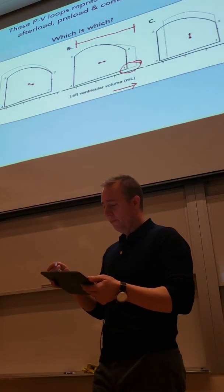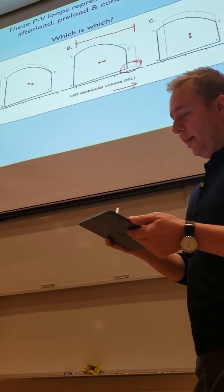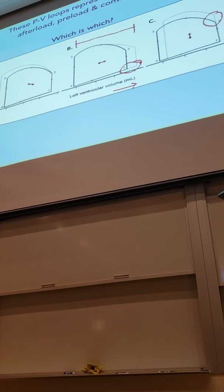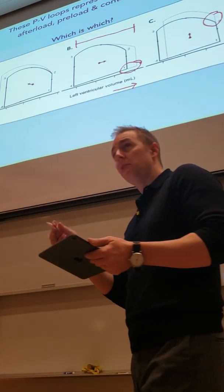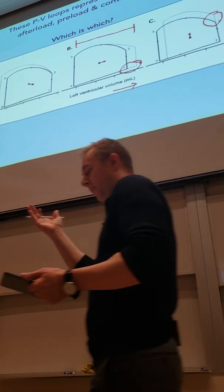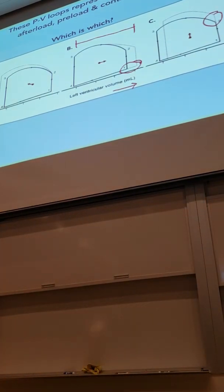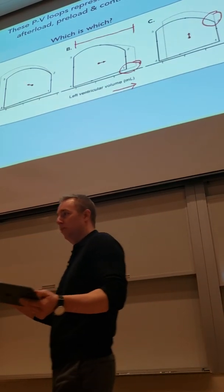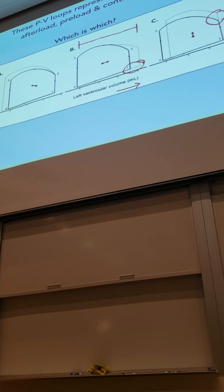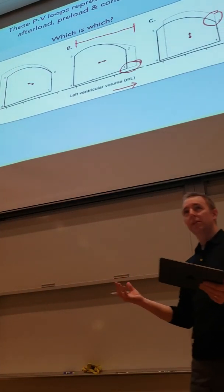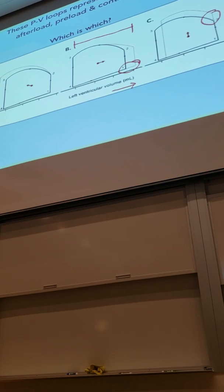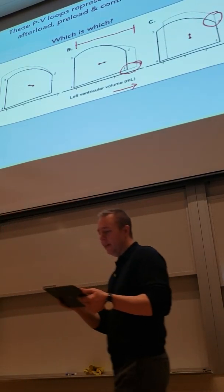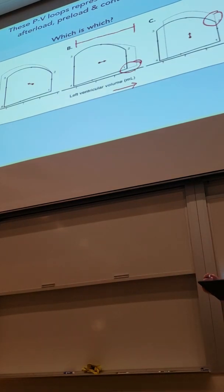C is afterload - there's more pressure work and less volume work. In diagram C, you've got more pressure being built up before it moves into the volume ejection phase, so we have more pressure work. Any time we have more pressure work, we have less volume work, because the heart does a certain amount of work for its contraction. If more of that tension goes into elevating pressure, there's less of that contraction available to push blood out. So C is demonstrating a higher afterload.